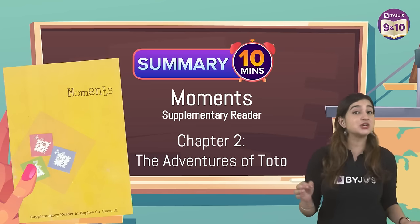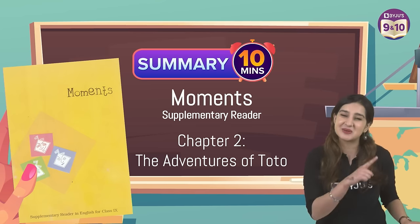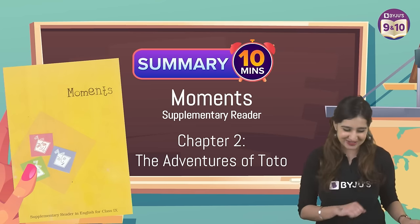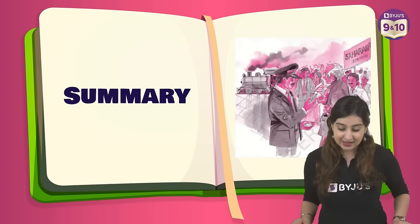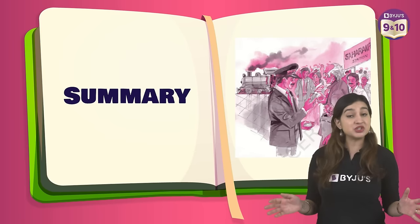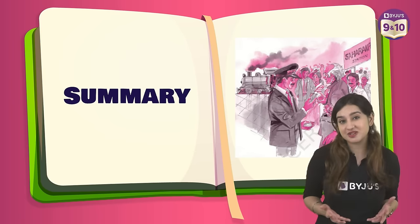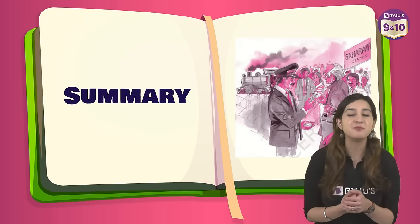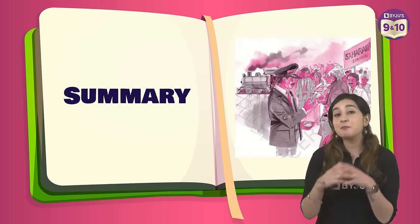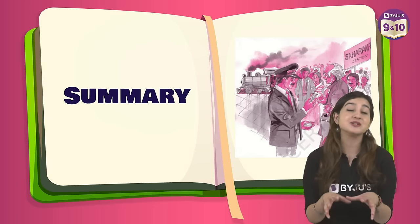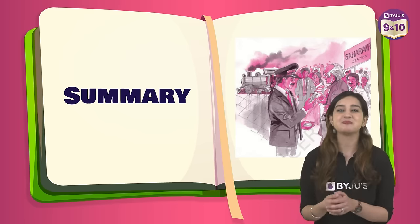Today we are going over the Adventures of Toto from Moments. The Adventures of Toto is an amusing story written by Ruskin Bond. This story features the pranks of a naughty monkey named Toto. The narrator's grandfather was very fond of animals.